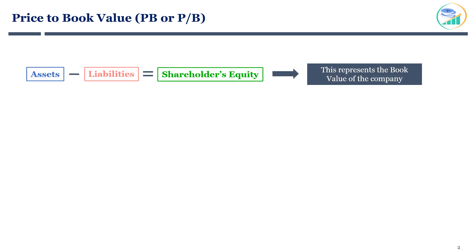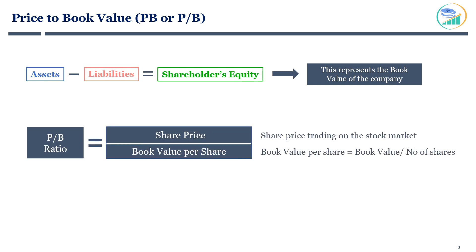Book value divided by number of shares outstanding gives you book value per share. Price to book value ratio is calculated as share price divided by book value per share. PB ratio is widely used as a relative valuation multiple for investment decisions.